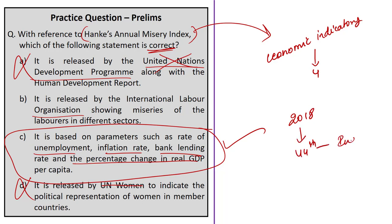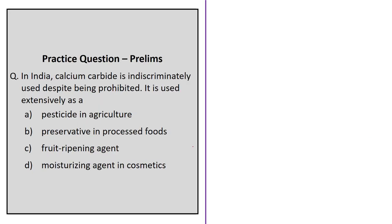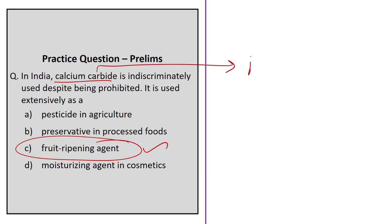The next question is based on calcium carbide. In India, calcium carbide is indiscriminately used despite being prohibited. The options given are: pesticide in agriculture, preservative in processed foods, fruit ripening agent, and moisturizing agent in cosmetics. The correct answer is fruit ripening agent — we hear about calcium carbide most often in relation to fruit vendors who use it to ripen fruits artificially. Also remember that using calcium carbide as an artificial ripening agent is prohibited in India as per Regulation 2.3.5 of the Food Safety and Standards (Prohibition and Restriction on Sales) Regulations of 2011.